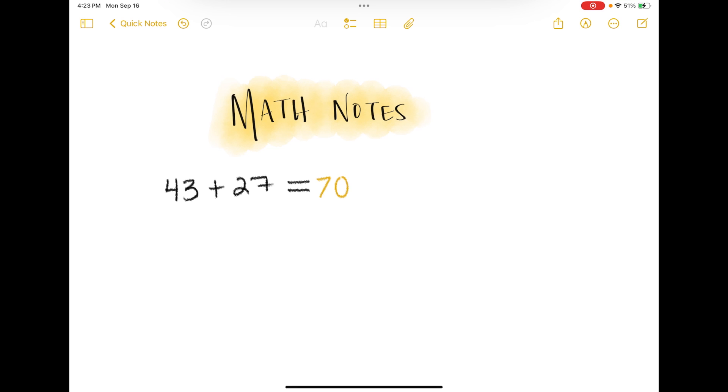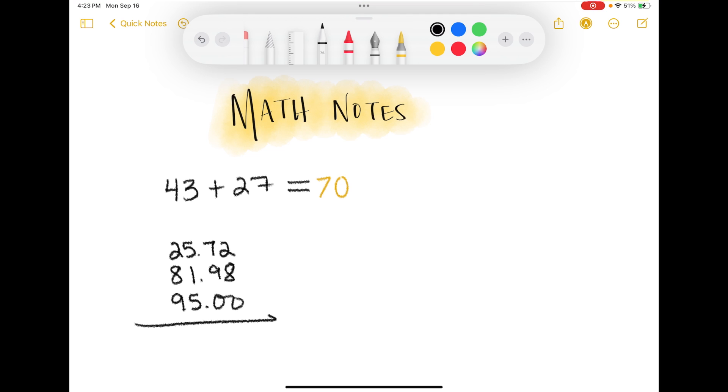It would also do this if I wrote something vertically. So if I wrote 25.72, 81.98, and 95.00 and then put a line under that, it's actually going to solve that as well.